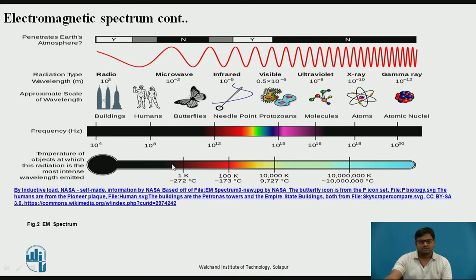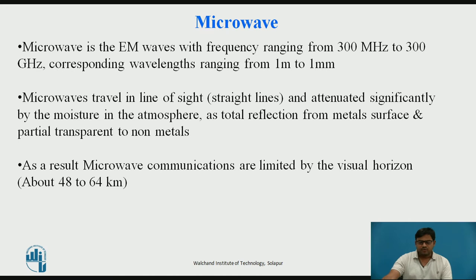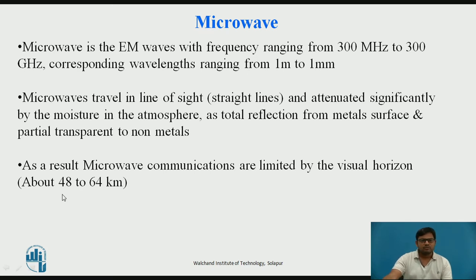Microwaves are the band ranging from 300 MHz to 300 GHz, which corresponds to wavelengths of 1 meter to 1 millimeter. Microwave transmission travels in a line-of-sight path — always a straight line. It is significantly affected by moisture in the atmosphere, reflected by metal surfaces, and partially transmitted through dielectrics. This is why microwave communication is limited to approximately 48 to 64 kilometers — the visual horizon or line-of-sight range.